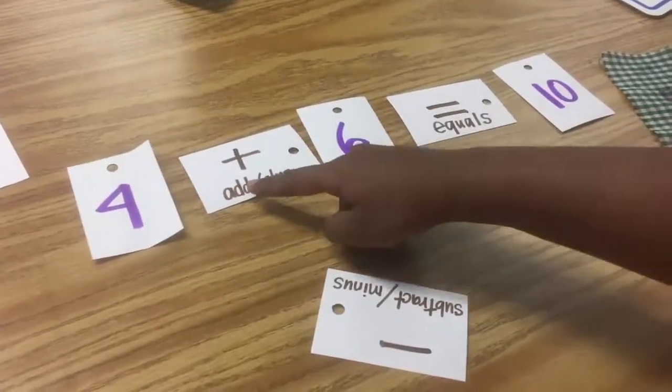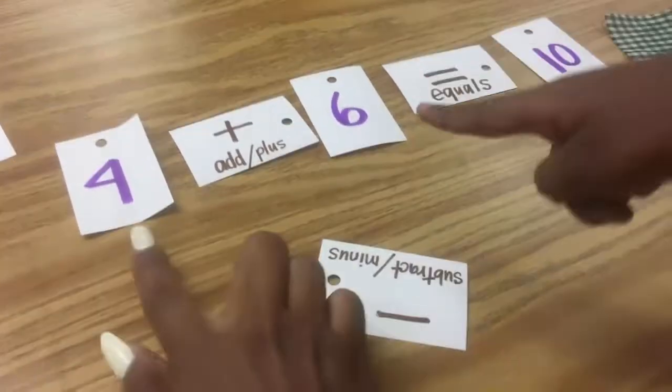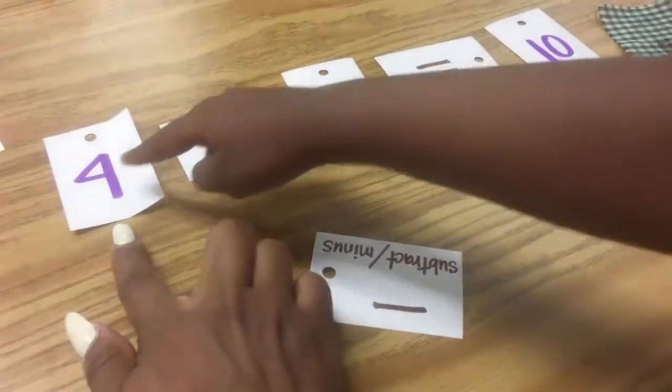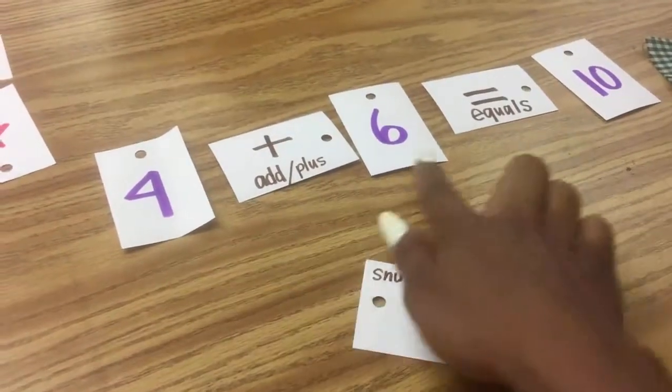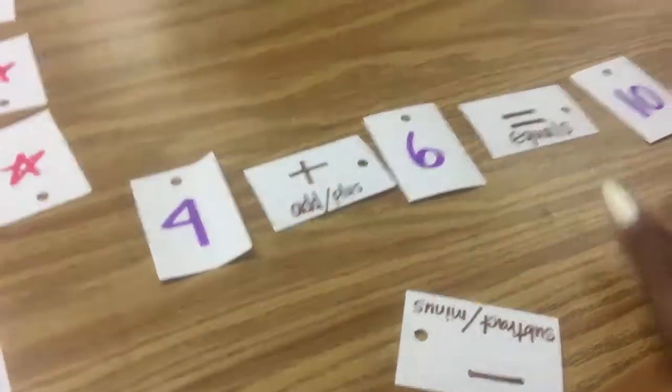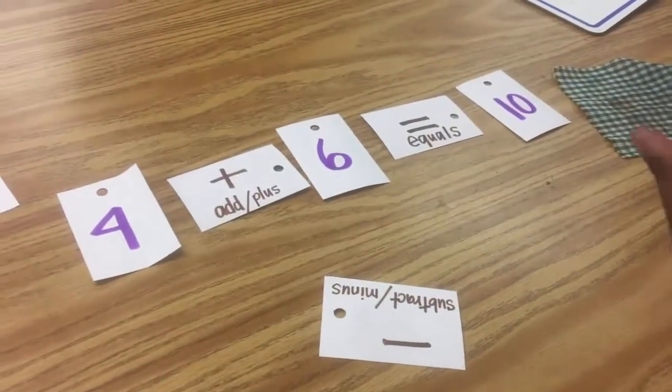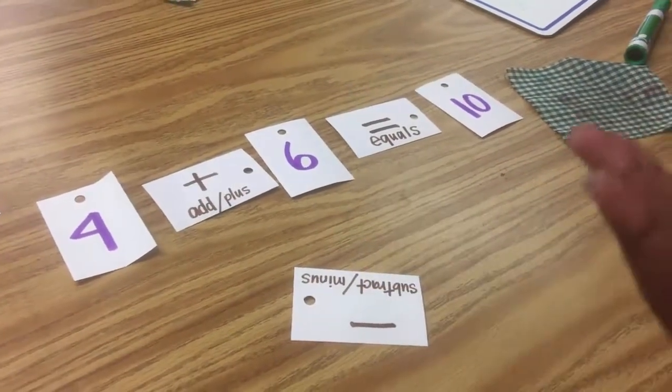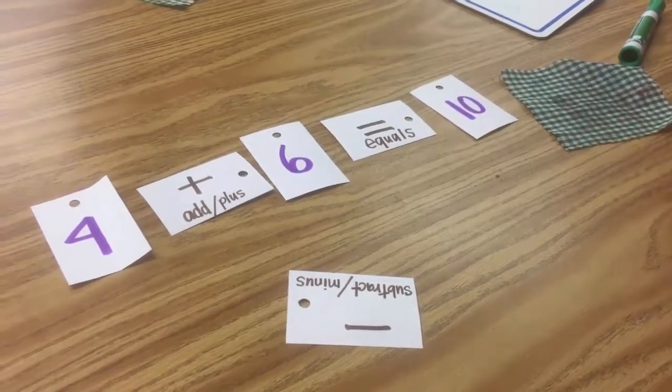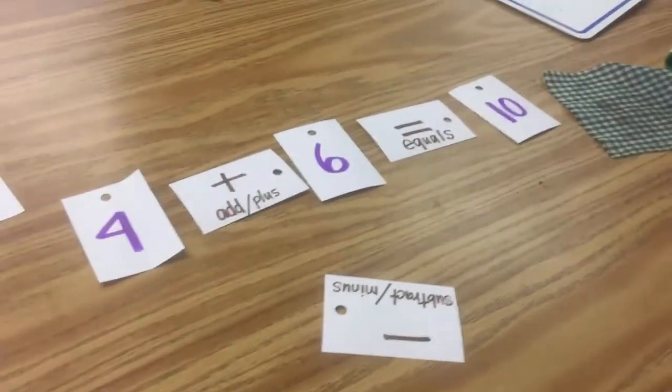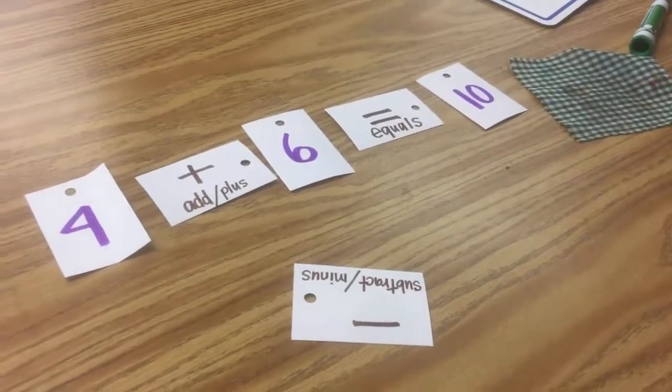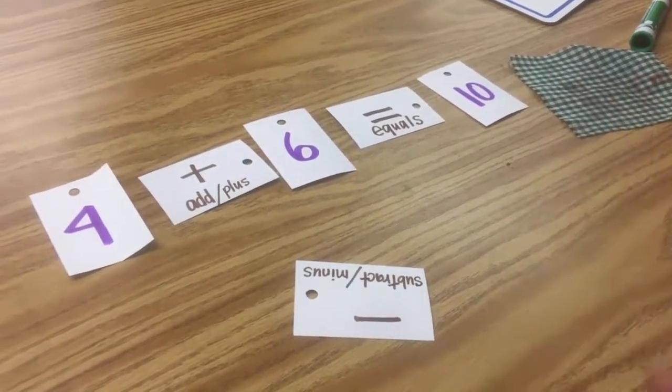Okay. Four plus six equals ten. Okay. Because that's true, see? One, two, three, four, five, six, seven, eight, nine, ten. Okay. So, you see, I got this four, and now I got my six. And that equals how many? Ten.